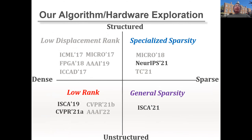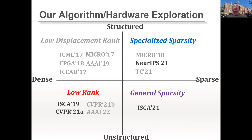Over the past four years, our group explored algorithm-hardware co-design along two directions: whether the model is dense or sparse, and whether the model is structured or unstructured. These two dimensions form four topic areas. In this talk, I will focus on specialized sparsity, generalized sparsity, and low-rank decomposition for algorithm-hardware co-design.